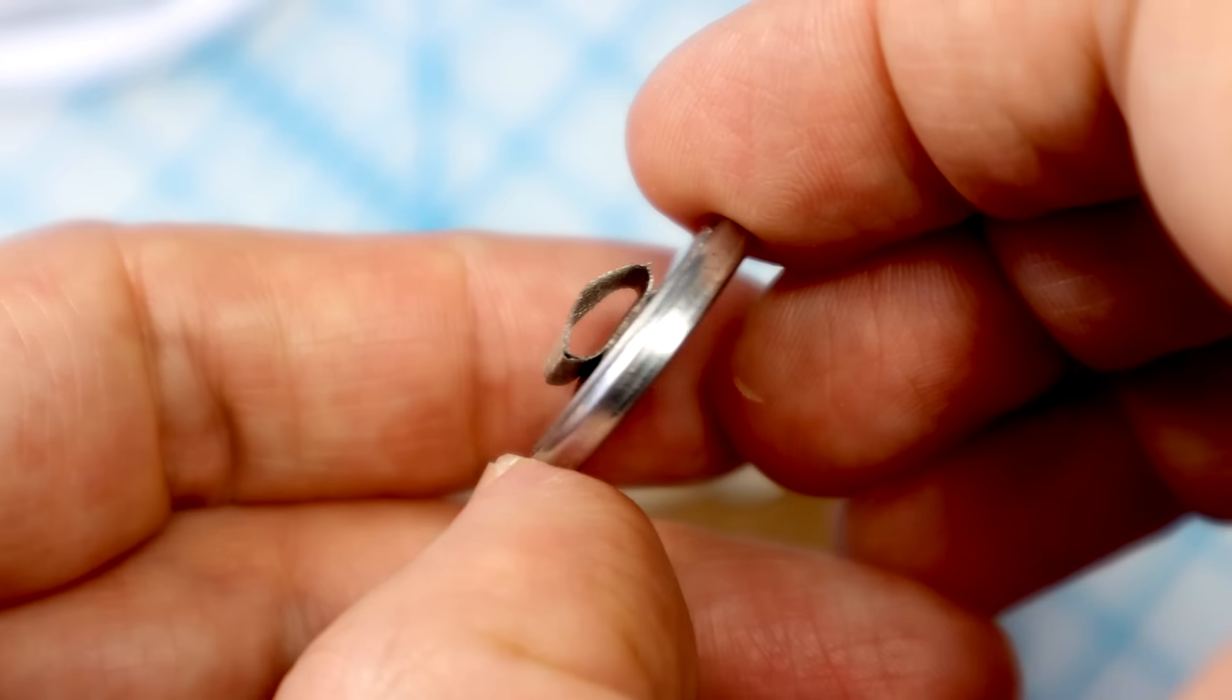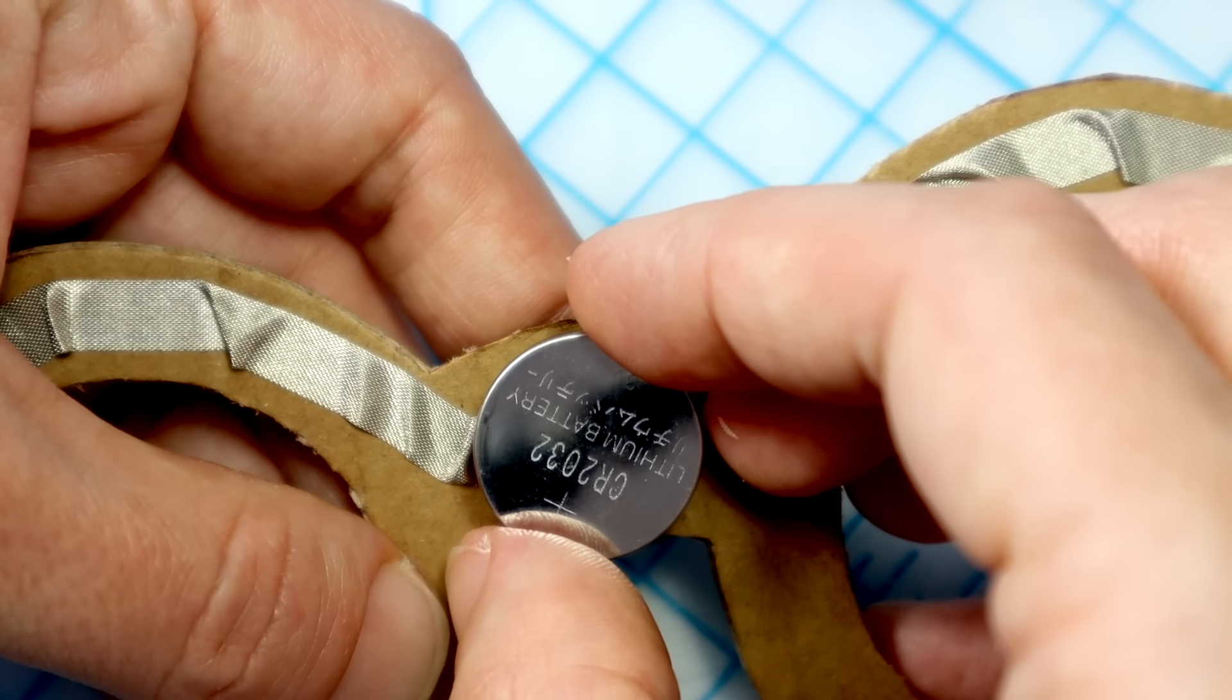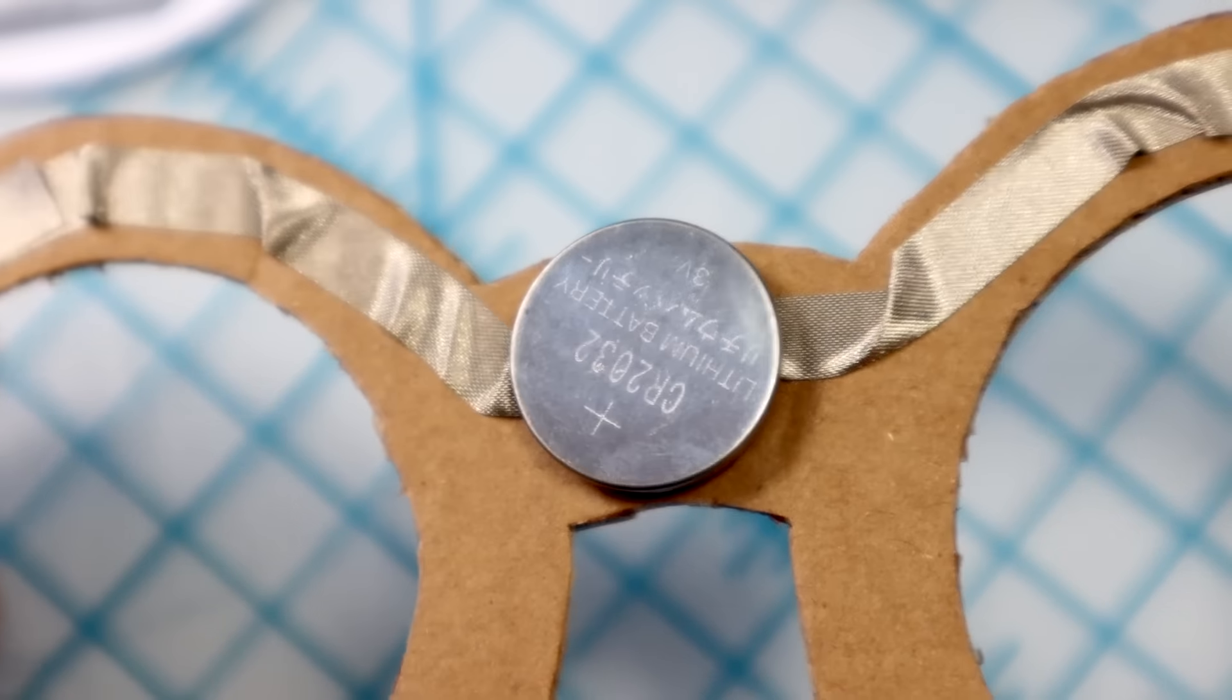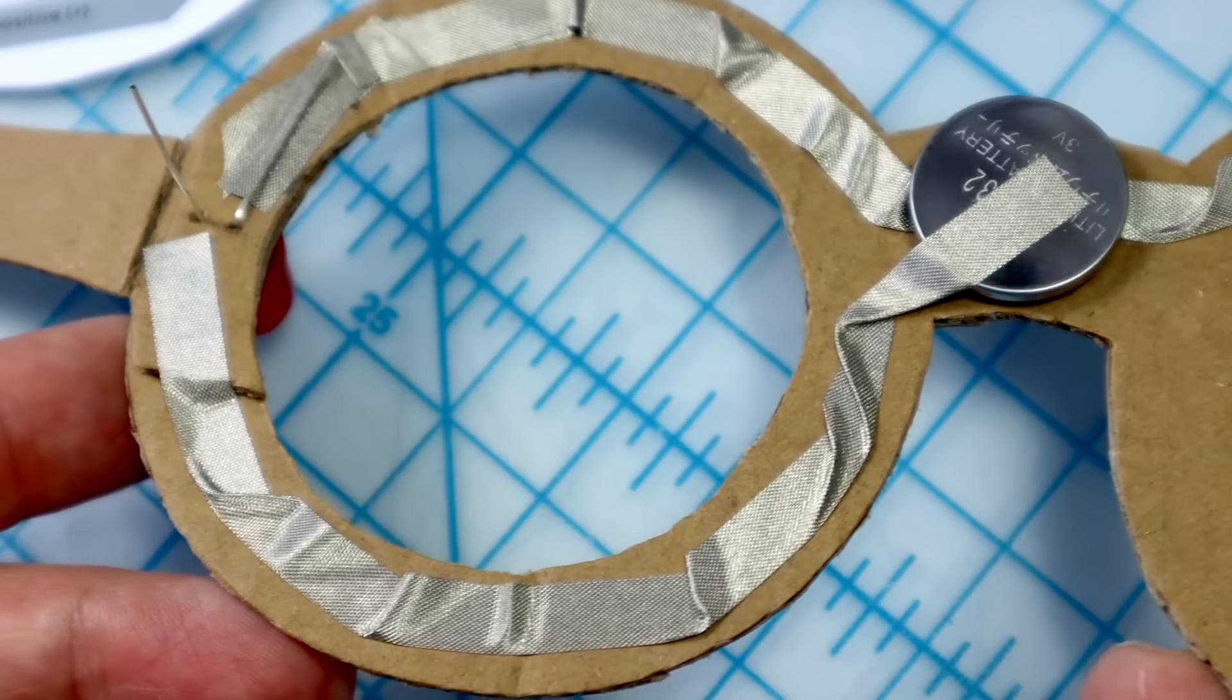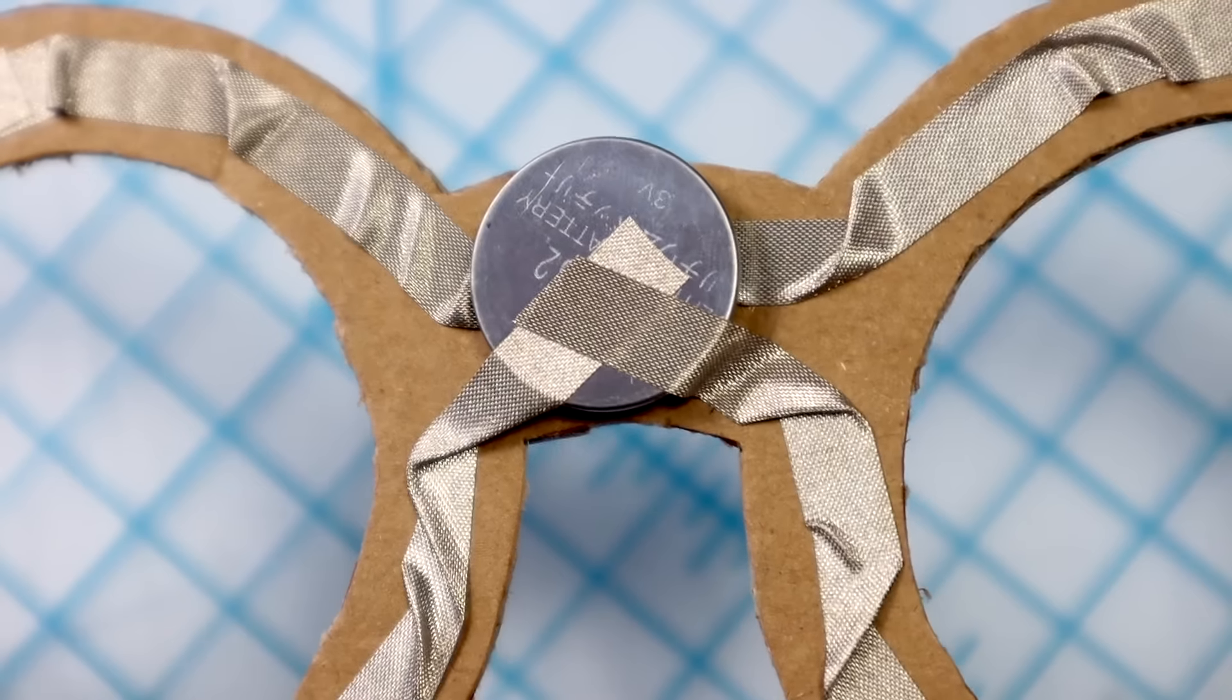Make a small loop of maker tape with the adhesive side out and place it on the negative side of the battery. Place the battery on top of the maker tape and center it on the bridge of the frame. Place maker tape along the bottom of the frames, laying the end on top of the battery. Then do the same thing on the other side.